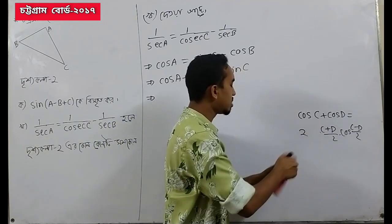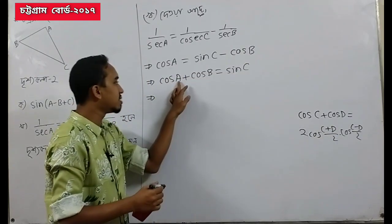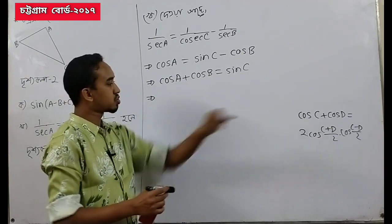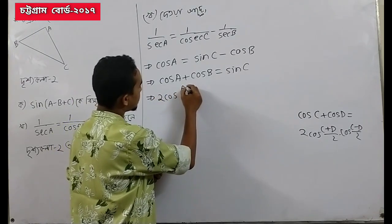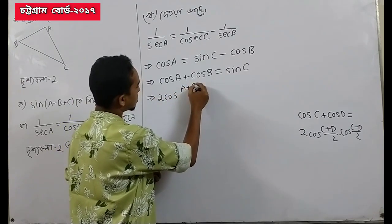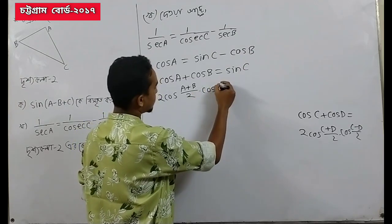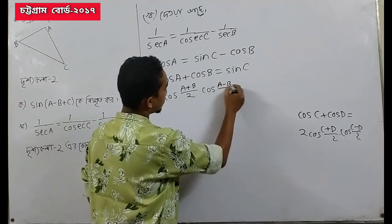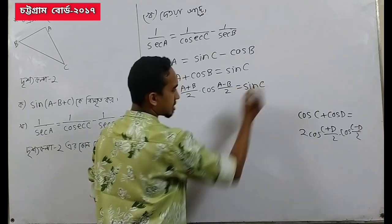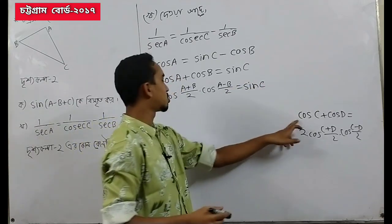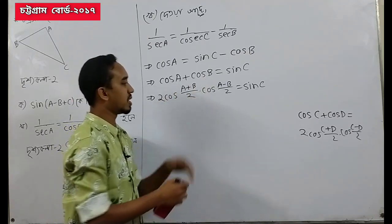This is cos c plus cos d. So this is cos c plus cos d. This is cos c and cos d, meaning cos c plus d. So c is cos(c plus b) divided by 2 into cos(a minus b), then a minus b divided by 2 equals sin c. So cos c plus cos d divided by 2 into cos(a minus b), giving c minus c.